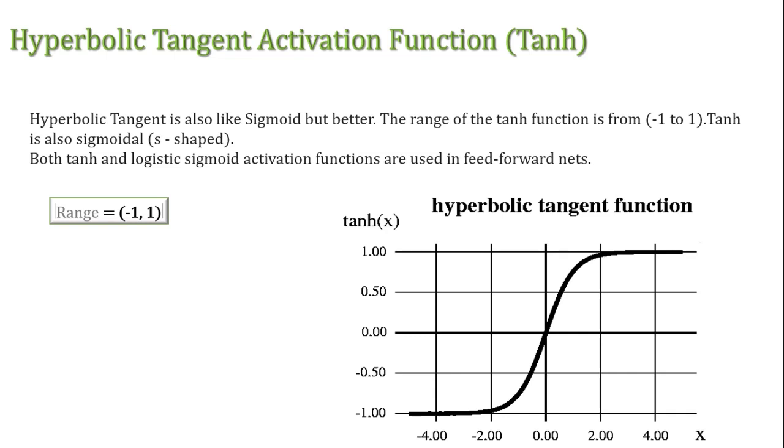So by definition tanh function is derived from the trigonometric function. That's why its formula is written as tan hyperbolic of h equal to sin hyperbolic of h divided by cos hyperbolic of x. A general problem with both sigmoid and tanh function is that they saturate. This means that the large value snap to 1 and small value snap to minus 1 or 0 for tanh and sigmoid respectively.